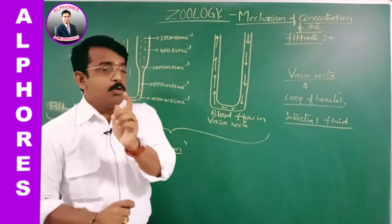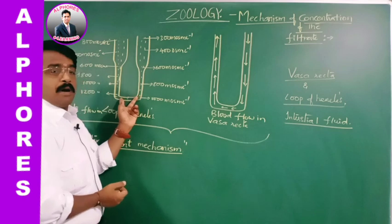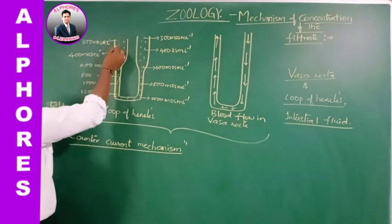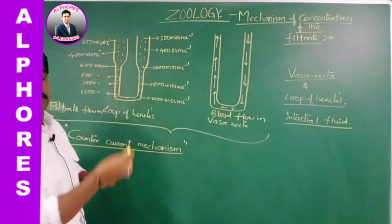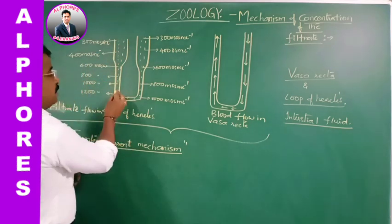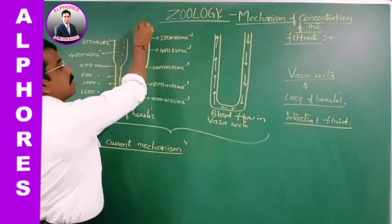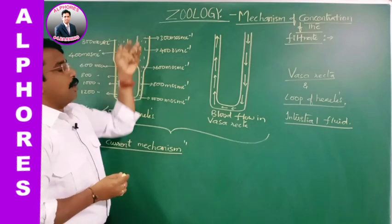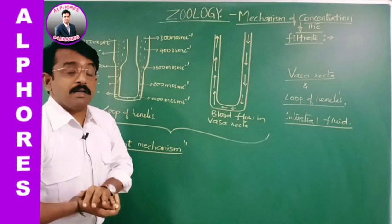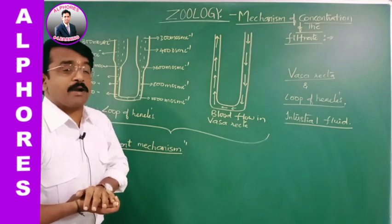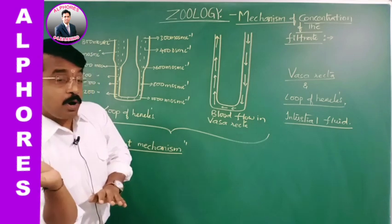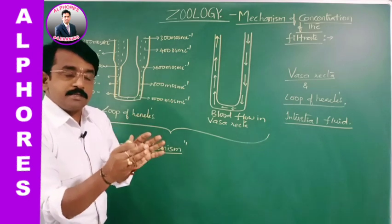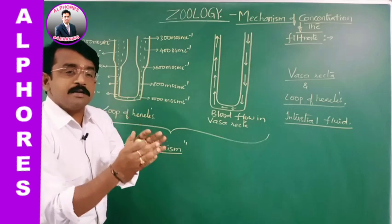The loop of Henle has two limbs running parallelly: descending and ascending. As the filtrate progressively moves, water to a large extent is absorbed, so concentration progressively increases. The ascending limb is impermeable for water, but a large extent of sodium chloride is absorbed. So ions go out but water remains. Since the ascending limb is impermeable for water, the concentration decreases.